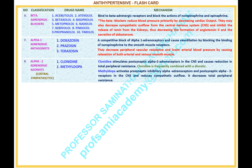Number 8: Alpha-2-adrenergic agonists, also known as central sympatholytics. Drugs: 1. Clonidine, 2. Methyldopa. Mechanism: Clonidine stimulates post-synaptic alpha-2-adrenergic receptors in the CNS and causes a reduction in total peripheral resistance; it is frequently combined with a diuretic. Methyldopa activates pre-synaptic inhibitory alpha-adrenergic receptors and post-synaptic alpha-2 receptors in the CNS and reduces sympathetic outflow, decreasing total peripheral resistance.